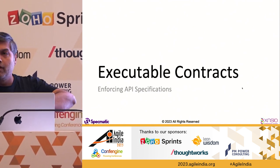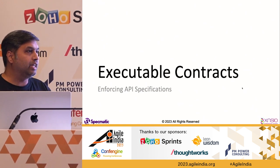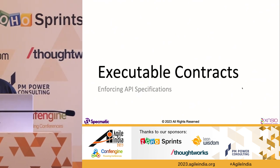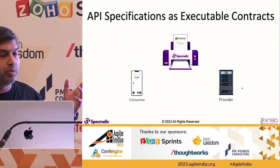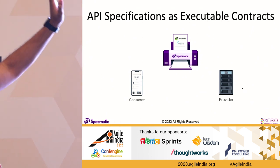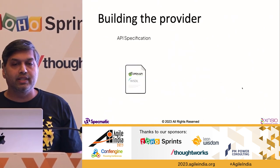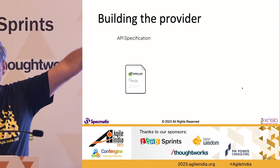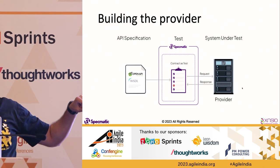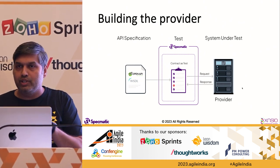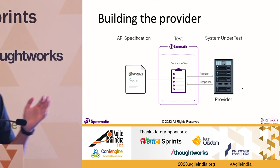Executable specifications: the idea is to take your OpenAPI specification and, through Specmatic, generate stubs for consumers and contract tests for providers — without writing code. On the provider side, you have the agreed API specification in central repo. Specmatic takes the spec, generates a whole bunch of tests, and hits your system under test. You can do this locally and also in CI to ensure your service adheres to the contract it agreed to.